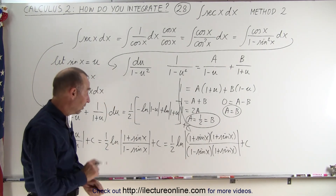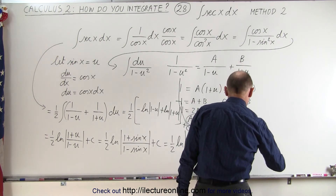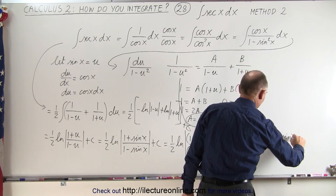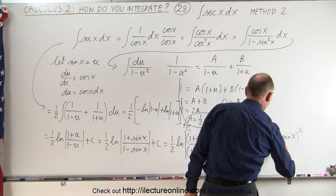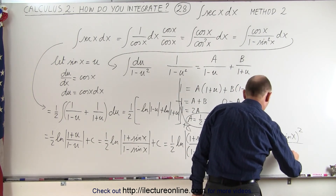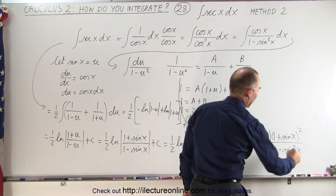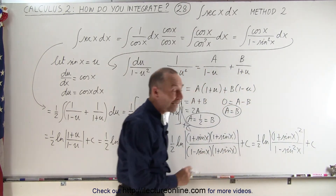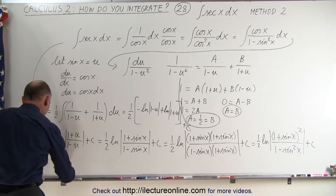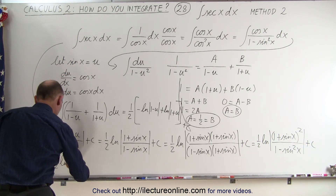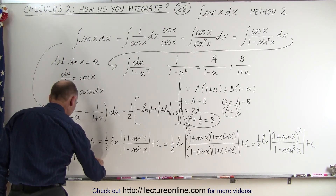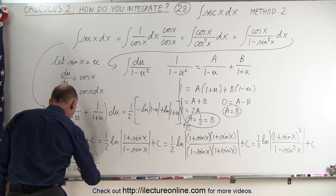In the numerator we get 1/2 times the natural log of (1 plus sine of x) squared, divided by — in the denominator — 1 minus sine squared of x, plus the constant of integration. And of course, 1 minus sine squared of x equals cosine squared of x. So we have 1/2 times the natural log of (1 plus sine of x) squared divided by cosine squared of x.